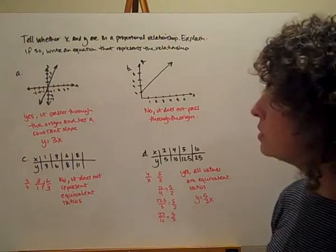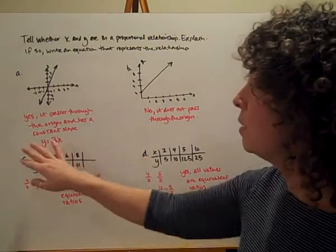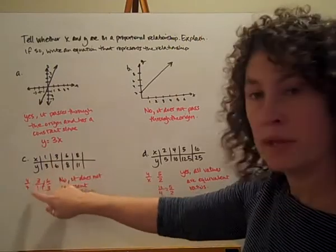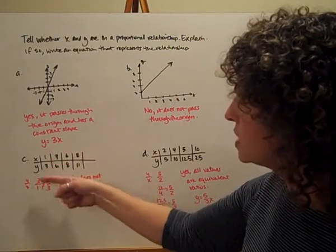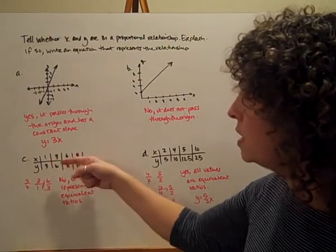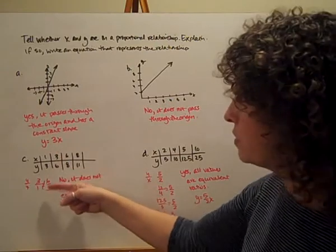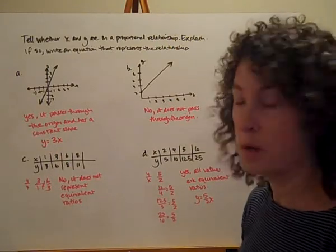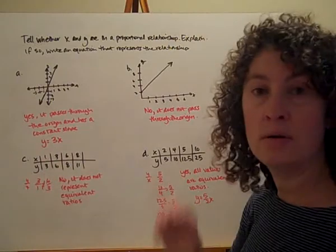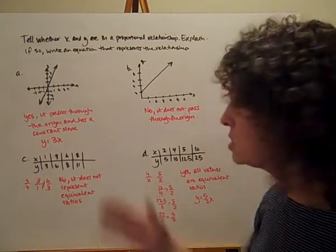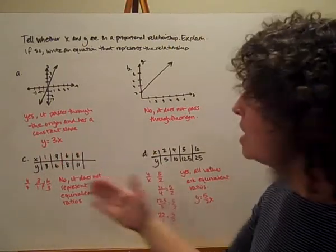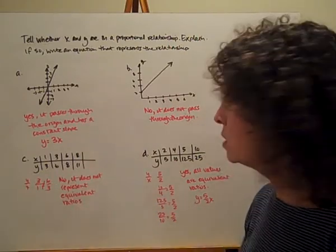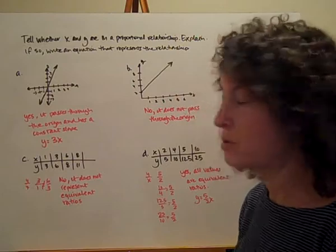Let's take a look at our table. Remember we want to see constant ratios going across this table, and I always want to think about my y over my x. So y over x: I have 3 over 1. Y over x: I have 6 over 3, which boils down to 2 over 1. Since I immediately found a pair that are not equivalent ratios, I don't care about the rest. As long as I've found one that doesn't match, it is not proportional because these are not equivalent ratios.